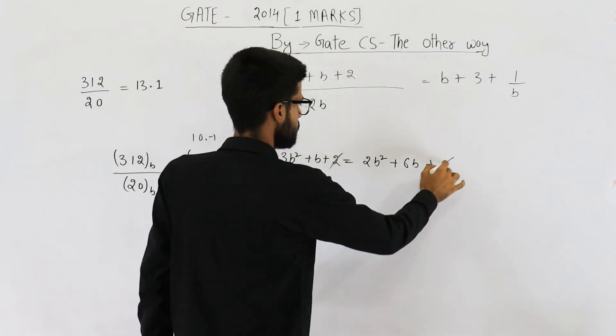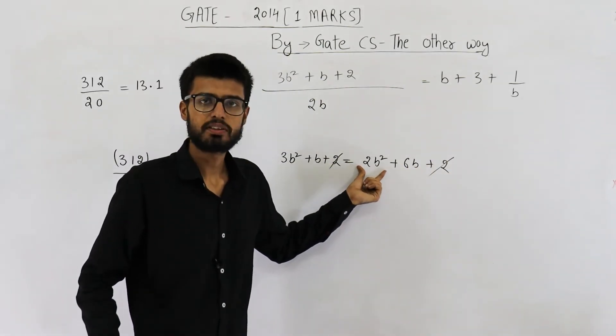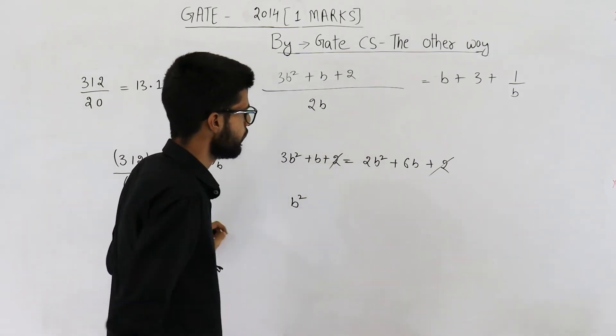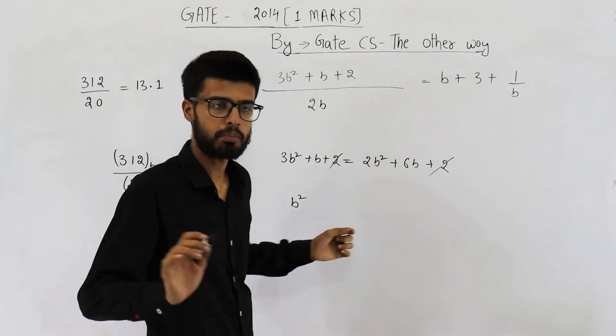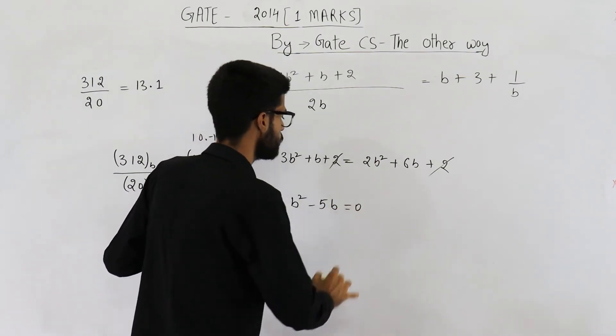2 and 2 can be cancelled. You are going to get 3 b square minus 2 b square which is b square. Then b minus 6 b will be minus 5 b is equal to 0.